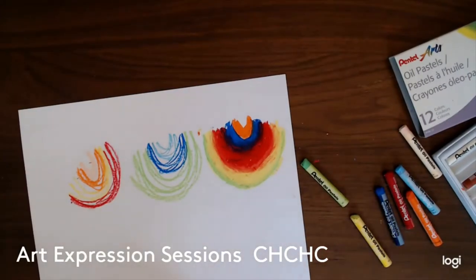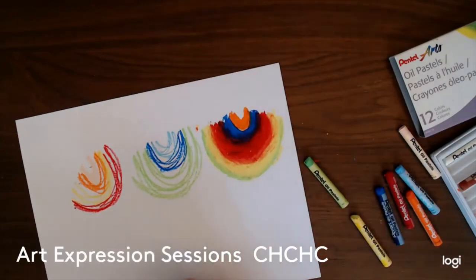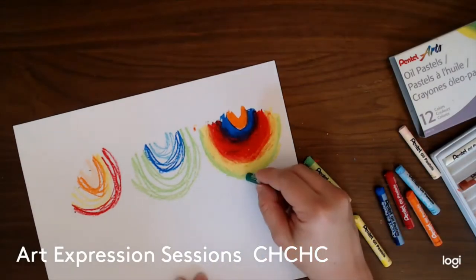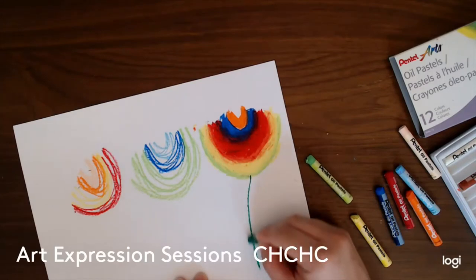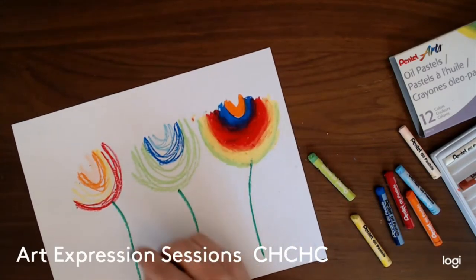Okay, now we're going to add some stems to make it look like a garden. And I'm just going to use my green crayon for that. This will be fun to do some blending too. So let's just start with some simple stems on each one and some leaves.